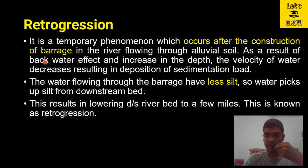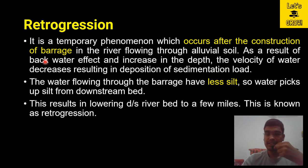Whenever the water starts to deposit in the upstream, the depth of water will increase, and when the depth increases, the velocity of flow will decrease. Due to this decrease in velocity, whatever sediment particles are coming from the upstream will try to deposit or settle at the bottom of the river bed.